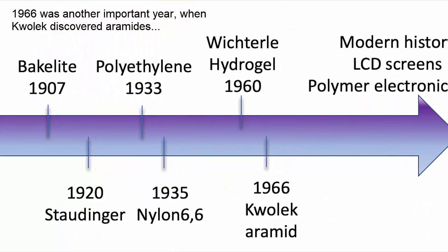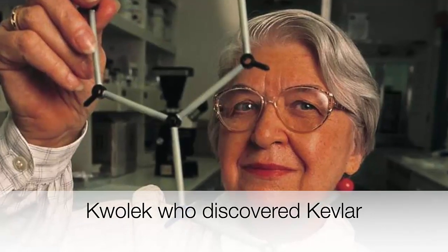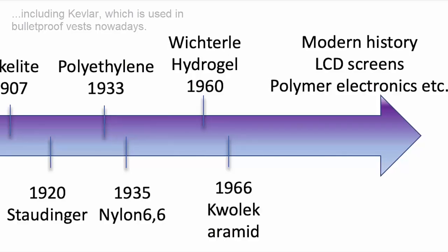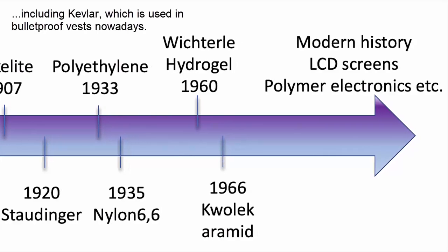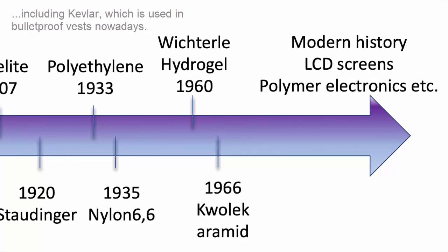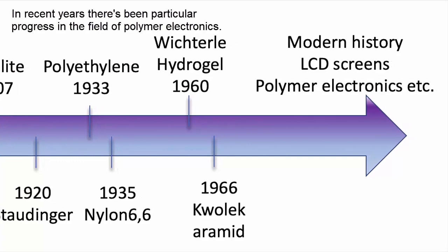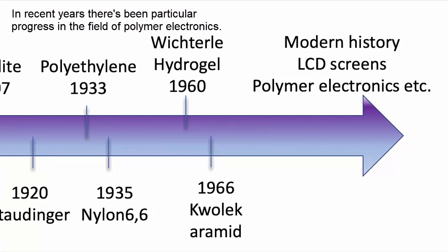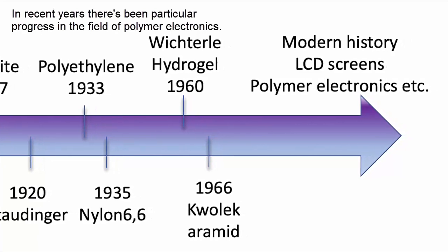1966 was another important year when Kwolek discovered aramids, which you better know as Kevlar, and they're used in bulletproof vests nowadays. In recent years there's been particular progress in the field of polymer electronics.